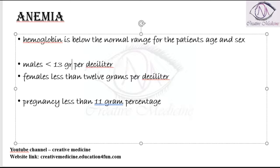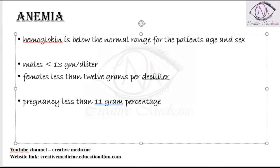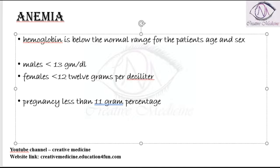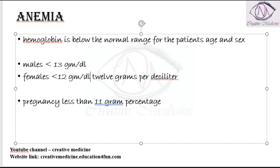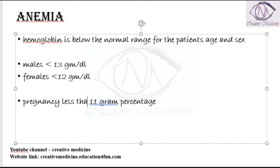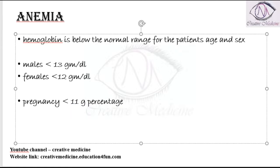In males, if the hemoglobin is less than 13 grams per deciliter, in females if it is less than 12 grams per deciliter, or in pregnancy if the hemoglobin concentration is less than 11 gram percentage, then we can classify the patient as having anemia.